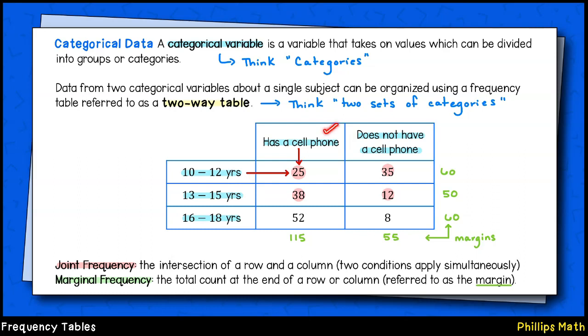Along the top, we have the categories yes has a cell phone and no does not have a cell phone. Down the left, we have age categories.